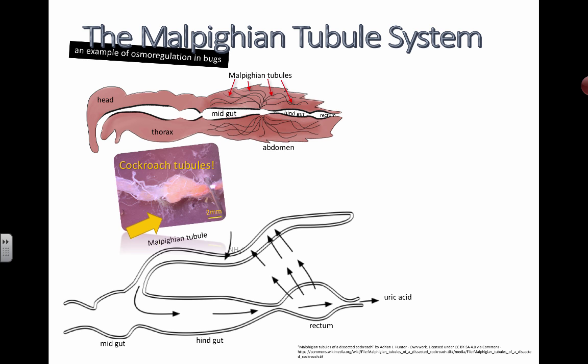The Malpighian tubule — there's this liquid called hemolymph, which is kind of the equivalent of blood. The blood is going to carry uric acid, and it takes some of the ammonium ions — we're actually going to convert these ammonium ions into uric acid for actual excretion. You should remember that we are excreting urea, while these kinds of bugs and arthropods are excreting uric acid.